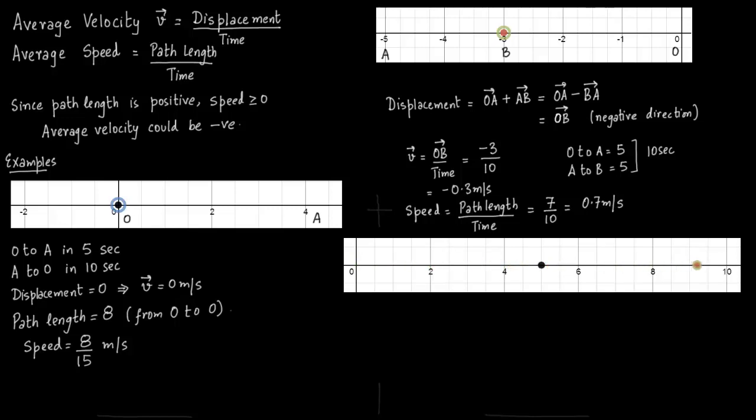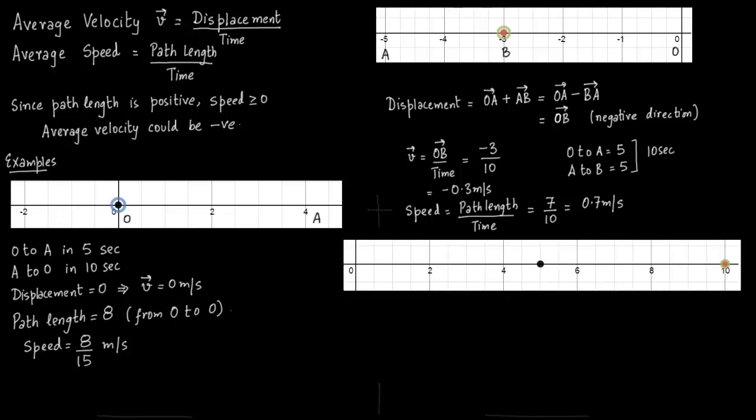You go from 0 to 5 and then from 5 to 10. So this 0 we will call as origin. This black dot we will call as C and this final resting point as A.